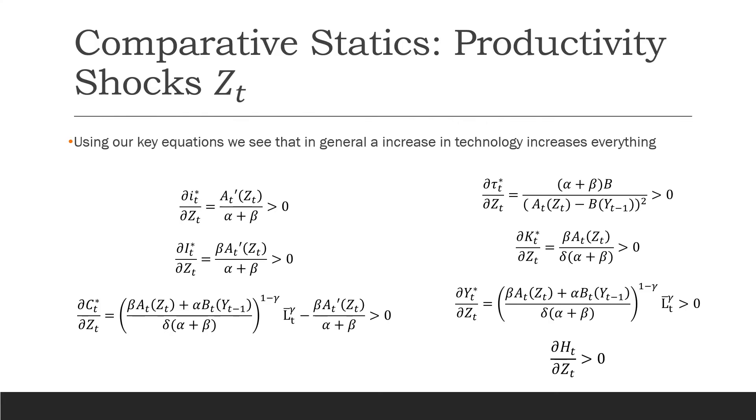So using our key equations, we see that a general increase in technology increases everything. That means we're going to see an increase in our interest rate, an increase in our investment, an increase in consumption, an increase in our period of production, an increase in our capital holdings, increase in output, and we'll also see an increase in this term known as gross domestic expenditure, which is really the total level of production in the economy.